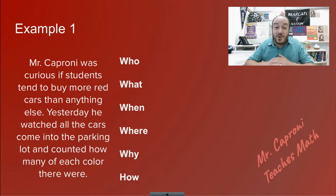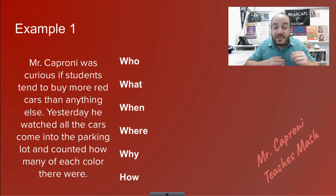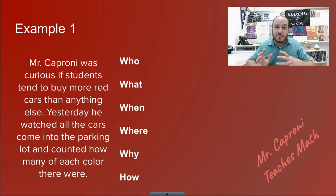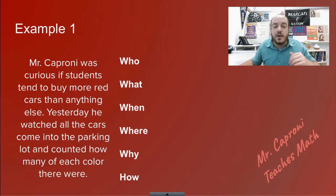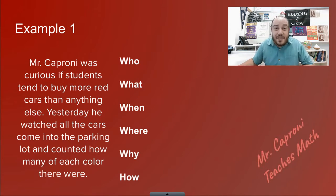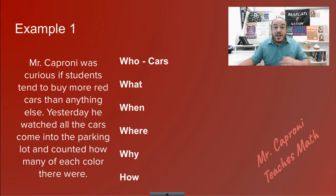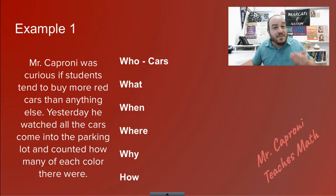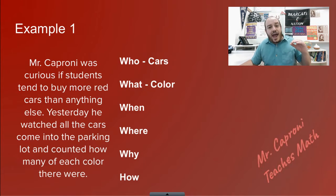Here's an example: Mr. Caponi was curious if students tend to buy more red cars than anything else. Yesterday he watched all the cars coming into the parking lot and counted how many of each color there were. Starting with 'who' — a lot of people want to say Mr. Caponi, but that's wrong. Mr. Caponi is the one doing the study, not the one being studied. The 'who' is actually the cars, because that's what he's observing and pulling information from. The 'what' is their color, since that's the information he's pulling from the cars.